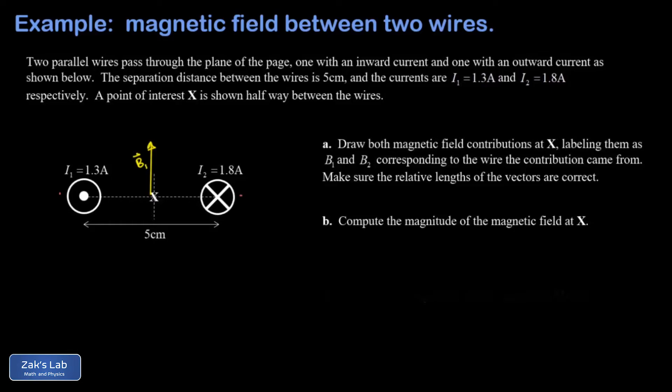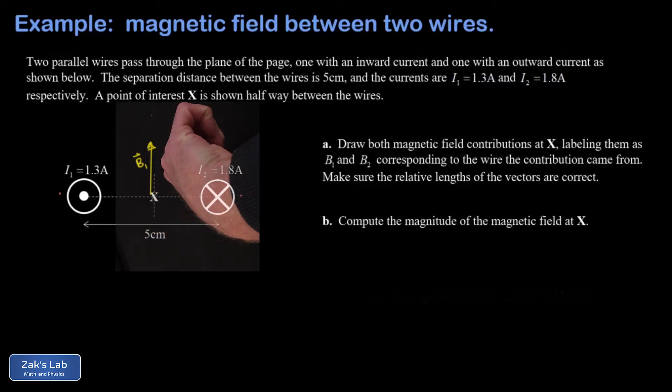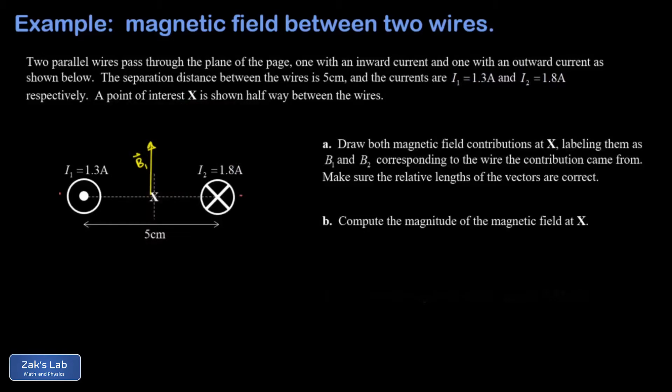We apply the right-hand rule again for wire number 2 on the right. We put our thumb into the page, the direction of the current. The magnetic field wraps around in the direction our fingers curl on our right hand. That also produces an upward magnetic field contribution at the point of interest.